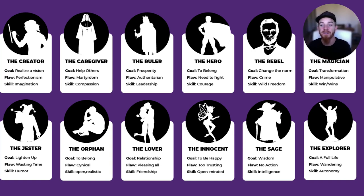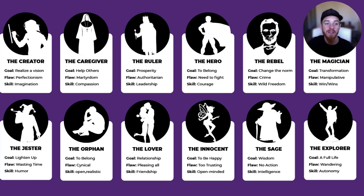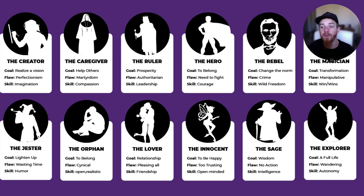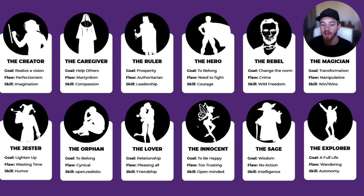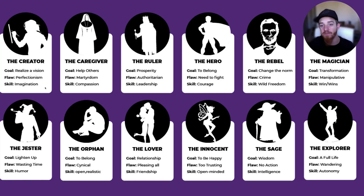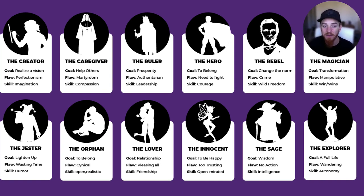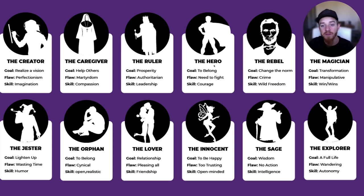Here are the 12 archetypes — the creator, the caregiver, the ruler, the hero, the rebel, the magician, the jester, the orphan, the lover, the innocent, the sage, and the explorer. Each one has a goal, a flaw, and a skill. What I tell my clients is: pick one primary and one secondary. If you're all of these, you're none of them — you won't stand out, you won't be unique, and you won't have your own voice.